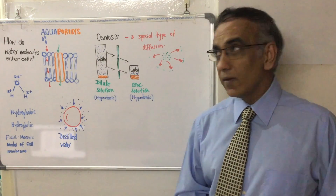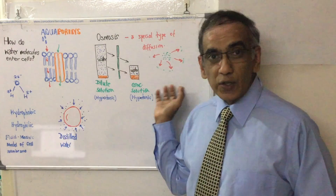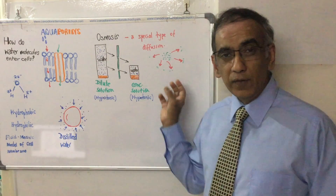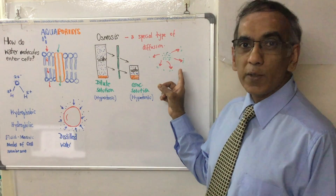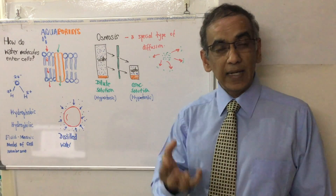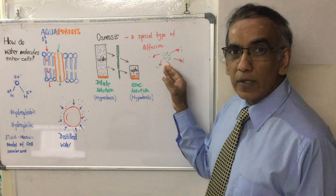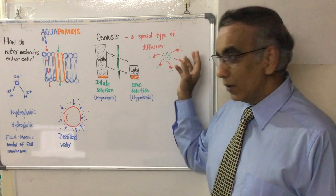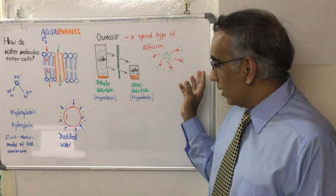We can say that osmosis is really a special kind of diffusion — diffusion being the spreading movement of a gas or liquid from an area of high concentration to areas of lower concentration.